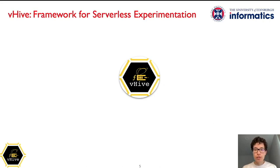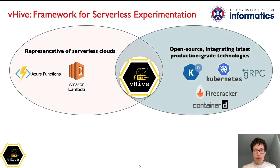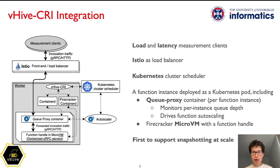We call this framework VHive, as we regard serverless as a home for functions that are tiny and numerous, just like honeybees. VHive strives to fill in the gap by satisfying all needs of the researchers in serverless. VHive is representative of production clouds and includes only open-source production-grade components. VHive features an ecosystem for serverless benchmarking both end-to-end and per component, supporting distributed tracing as well.